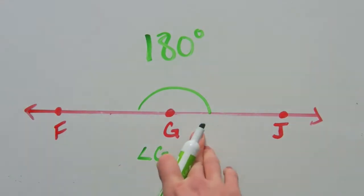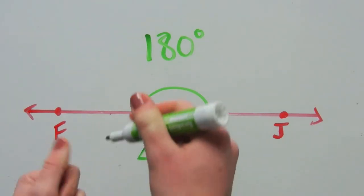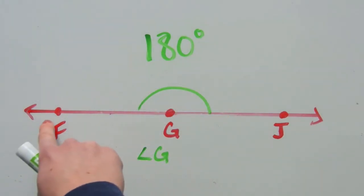And this is a special case because ray GJ and ray GF are opposite rays, meaning that the points fall on the same line. They're all collinear.